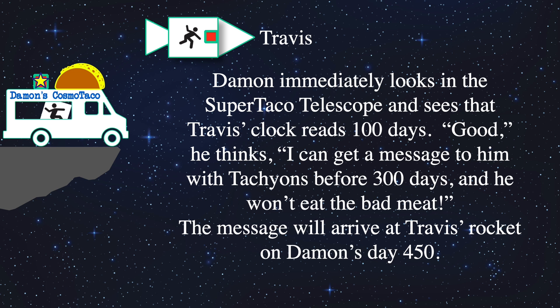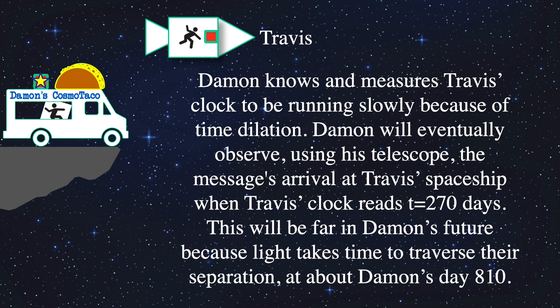According to Damon's calculations, the message will arrive on Travis's rocket on Damon's day 450. Now Damon knows and measures Travis's clock to be running slowly relative to his because of the special relativistic time dilation. Damon calculates that the message will arrive at Travis's spaceship when Travis's clock reads 270 days. Damon also calculates that he'll be able to see in his telescope Travis getting the message and being safe on his day 810. That's going to be a long wait, but at least the message is going really fast by tachyons.